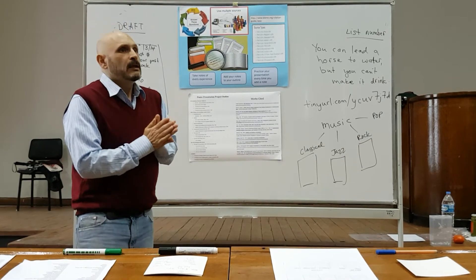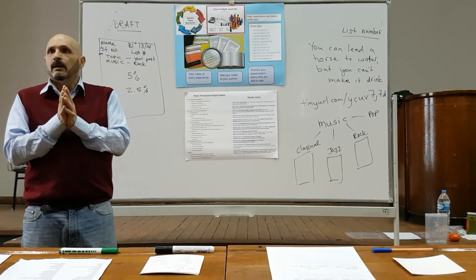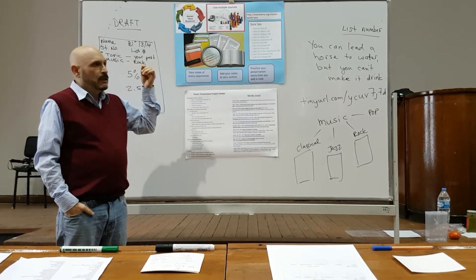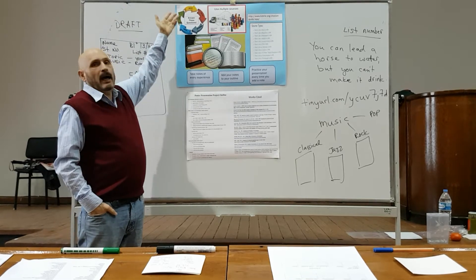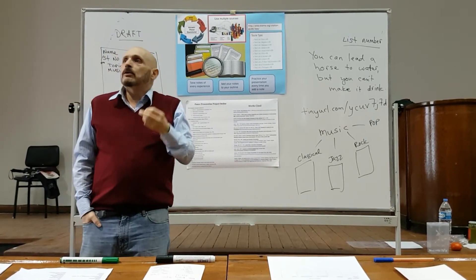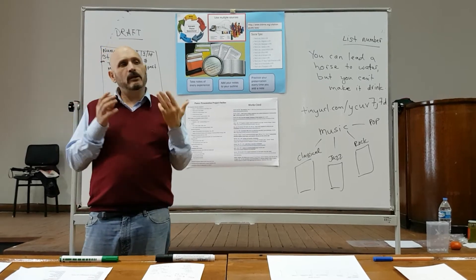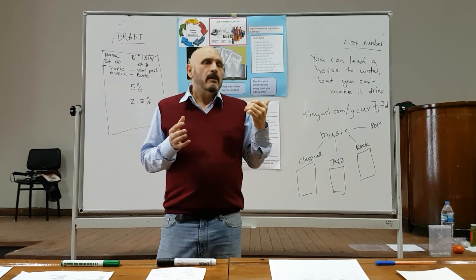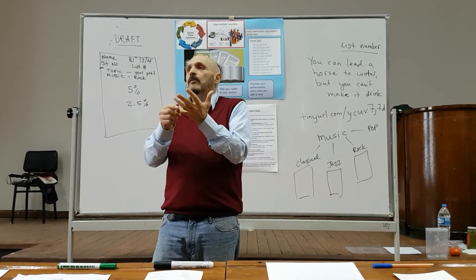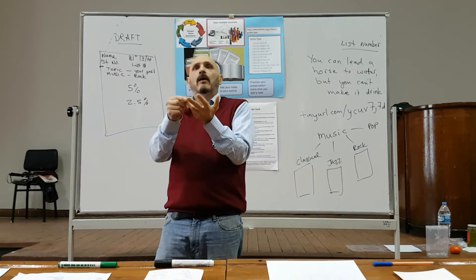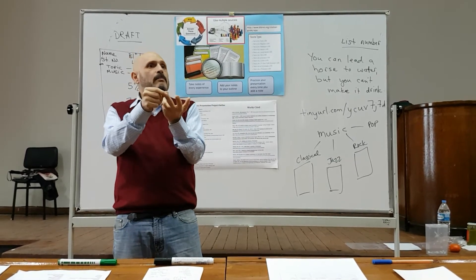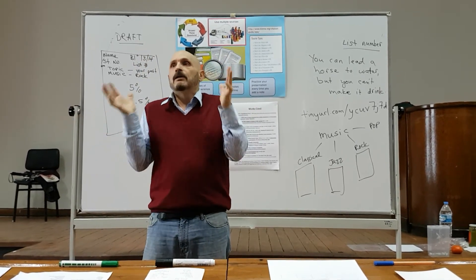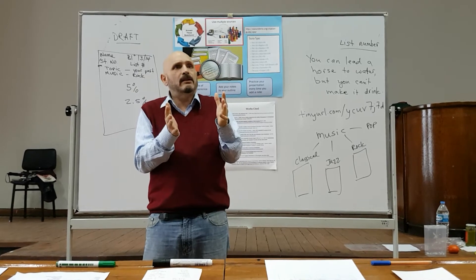Once you pick your topic, the very first thing you need to do is ask yourself some questions — what, where, why, how, who. You need to know: what do I want to talk about? For example, if your topic is rock music, you need to make a decision. Do I want to talk about the people of rock music? Do I want to talk about specific bands? Do I want to talk about the history? Because you only have five minutes, you don't have unlimited time, so you have to make decisions — you can't just talk about everything.